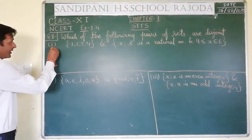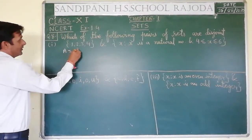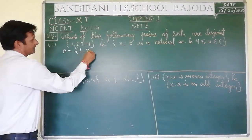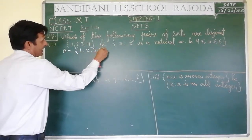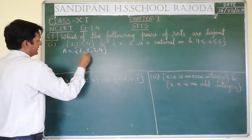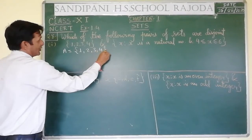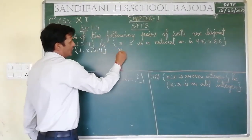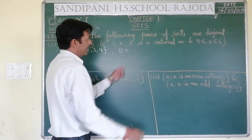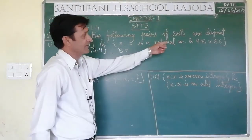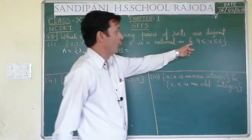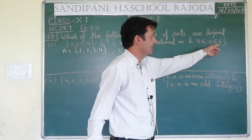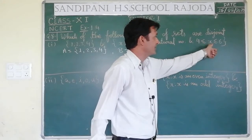First, we have assigned A = {1, 2, 3, 4}. And B is equal to: x is such that x is a natural number and 4 ≤ x ≤ 6, means B = {4, 5, 6}.